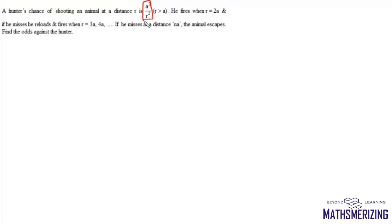Here the question is: a hunter's chance of shooting an animal at a distance r is a²/r². He fires when r equals 2a, and if he misses, he reloads and fires when r equals 3a, 4a, and so on. If he misses at a distance of na, then the animal escapes. Find the odds against the hunter.